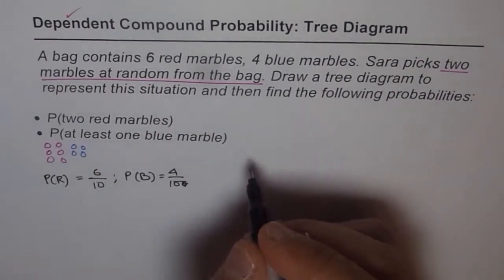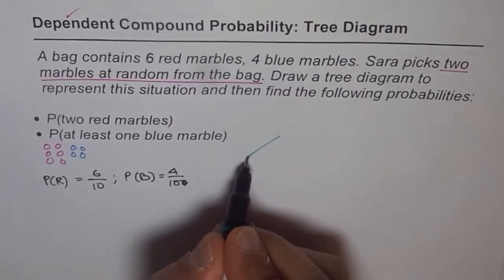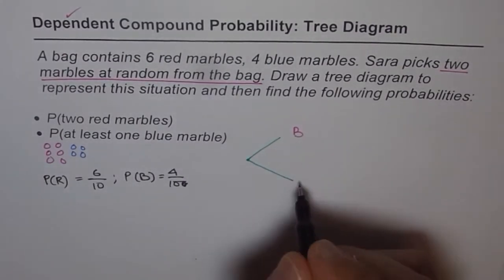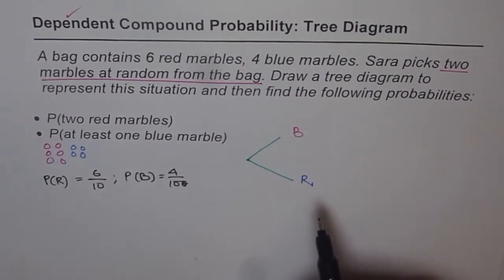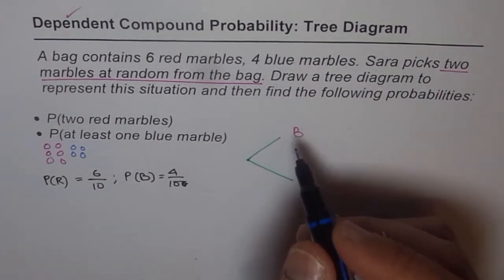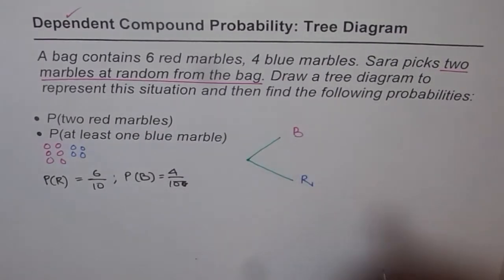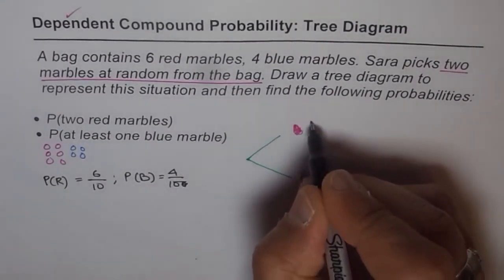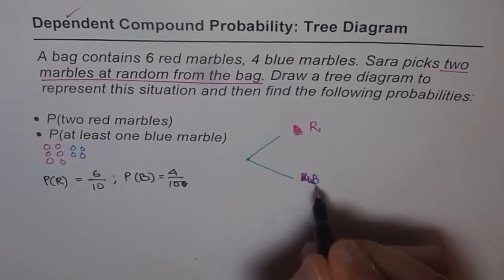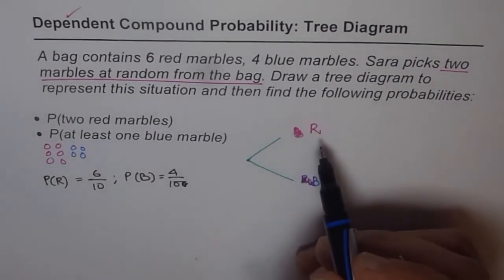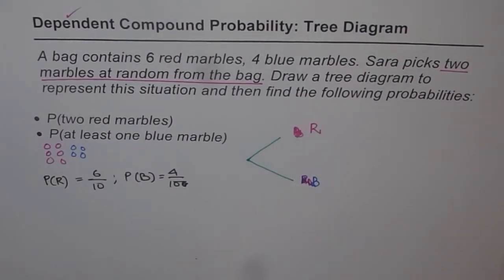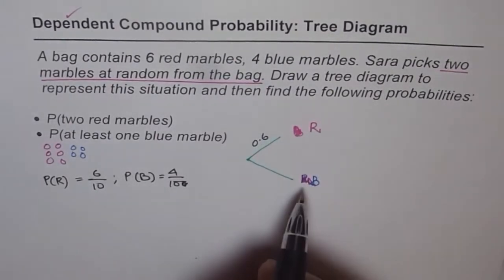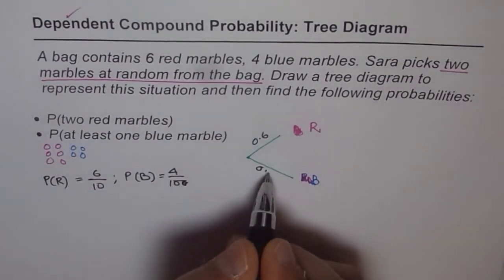Let's make our tree diagram. For the first pick, there are 2 possibilities: Sarah gets red or blue. The probability of getting red is 6 out of 10, or 0.6, and the probability of getting blue is 4 out of 10, or 0.4. For the second pick, from either branch, she could again get red or blue.